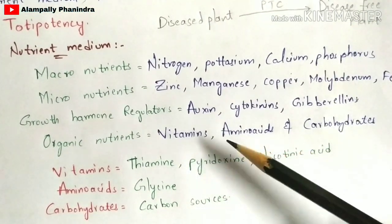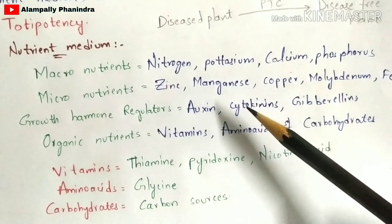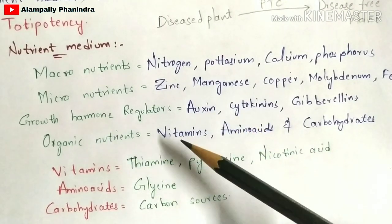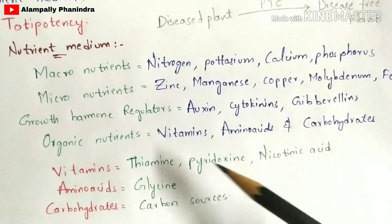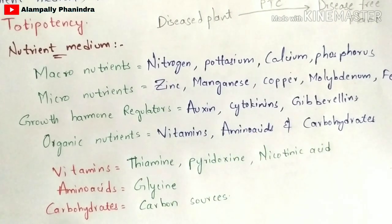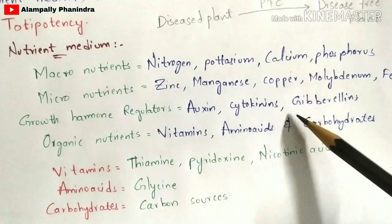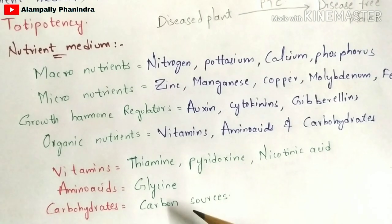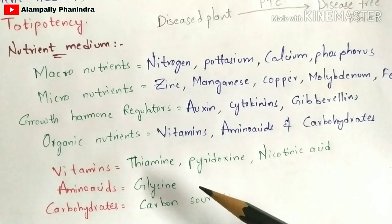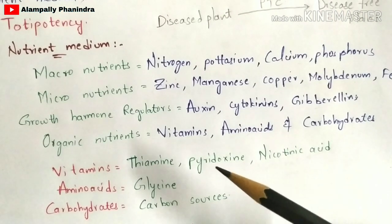Growth hormone regulators include auxin, cytokinins, and gibberellins, and cytokinins plays a major and vital role in plant tissue culture. Organic nutrients include vitamins, amino acids, and carbohydrates. Vitamins include thiamine, pyridoxine, and nicotinic acid. Among the 20 amino acids, glycine is mostly preferred. Carbohydrates are taken in the form of carbon sources such as glucose, fructose, and sucrose — with sucrose playing the major role as it mainly helps in plant development.